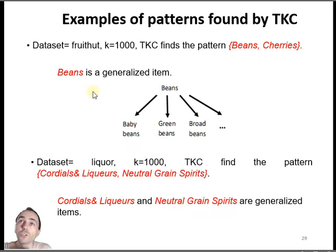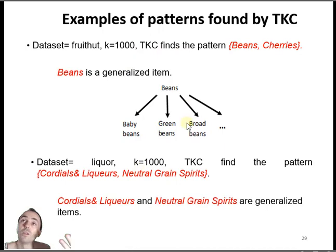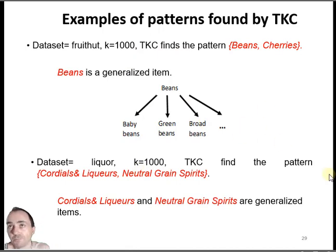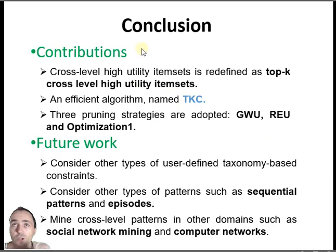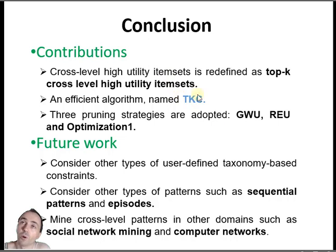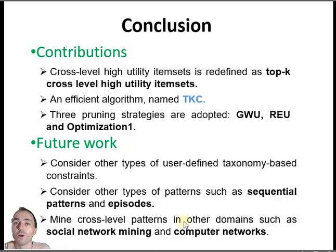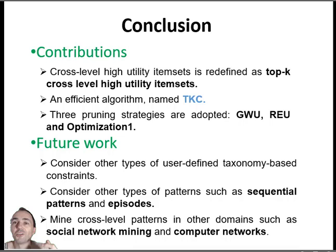We also found some real interesting patterns, like beans and cherries at different levels of categories. In conclusion, we defined a new problem about cross-level high utility item set mining and an algorithm with optimizations. The code and data will be available on our website. Thank you.